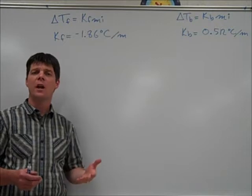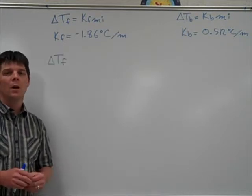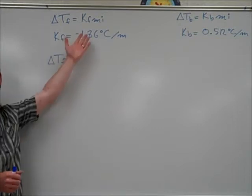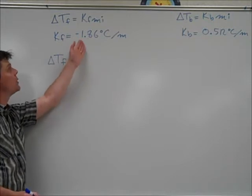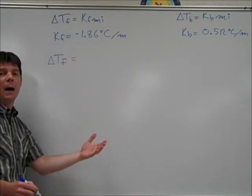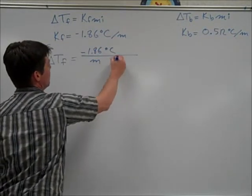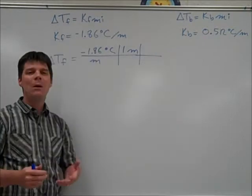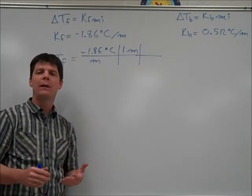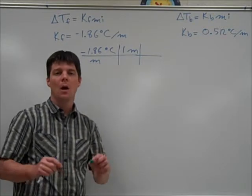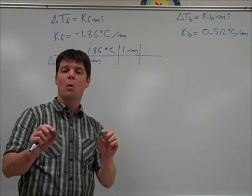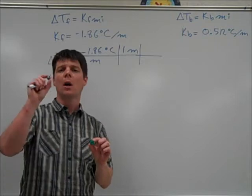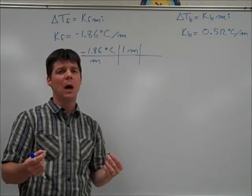Let's consider the change in freezing and boiling temperatures for the salt solution in water. To calculate the change in freezing temperature for a sodium chloride solution, we use delta Tf equals Kf times m times i. Kf equals negative 1.86 degrees Celsius per molality, and the molality is 1. The i value tells us how many dissolved particles are created when sodium chloride dissolves. When sodium chloride dissolves in water, we get two ions: a sodium ion and a chloride ion. So for every one formula unit of sodium chloride, we get two dissolved particles, making our i value 2.